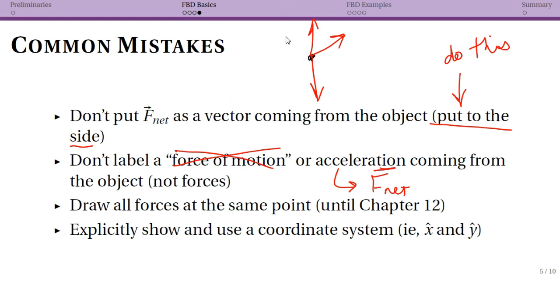Next, make sure that you're drawing all forces at the same point, like I did here. They all originate at the same point and then point away—they're vectors. We don't need to worry about drawing the shape of the object again. The only time that I ever do is when it's like a box on a ramp and I want to clearly show what the angle is.